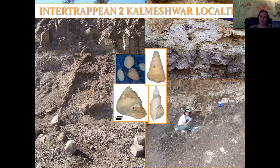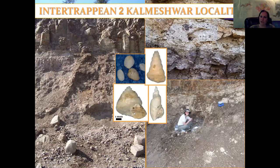Now we're into Intertrapian 2 — we've had two different flows come through. This is where we saw the columnar basalt. This is what the sediments look like, and here are some of the snails that came out of it. It had more of a white color as opposed to that greenish color, but age-wise it's definitely Intertrapian 2. There are some ostracods; I didn't find any vertebrates in this section.